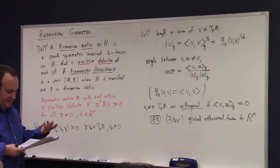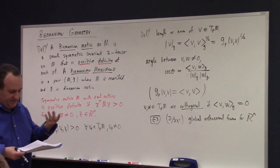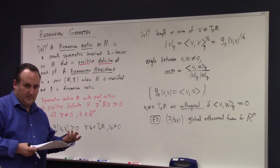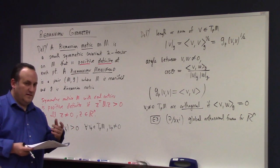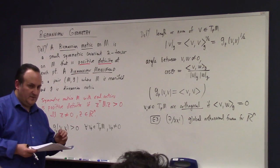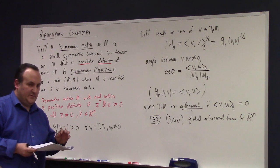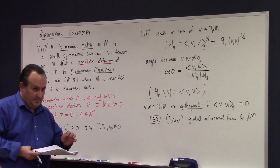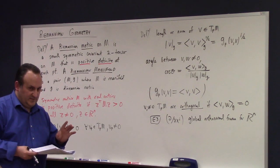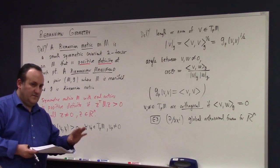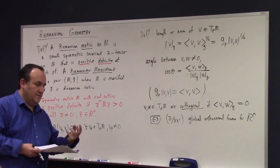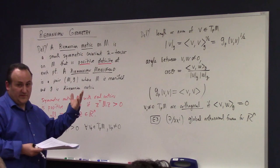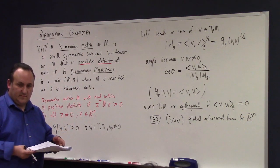So the examples he gives, like example three, he points out that partial partial x_i is a global orthonormal frame for R^n. I think we had that example before. And then he also points out the frame E1, E2 on the punctured plane is an orthonormal frame for R², but it's not a coordinate frame in any coordinates. Corollary 13.8. Let (M,g) be a Riemannian manifold with or without boundary. For each P, there is a smooth orthonormal frame on a neighborhood of P.